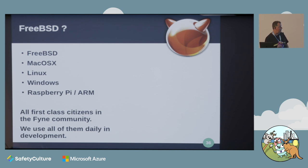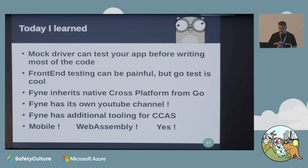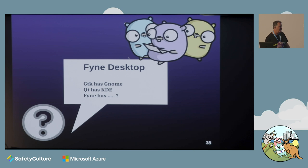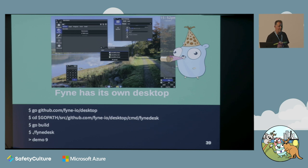We use all the things every day - we're not just Linux or Mac developers, we do it all. Andy is doing a project in the UK with hospitals, taking medical imaging data off expensive machines, running it on a Raspberry Pi with a portable screen to get information out in the field very quickly and cheaply - that's using Fyne. GTK has GNOME, Qt has KDE, Fyne has our own desktop - mainly for medical imaging applications, but it's growing to the point where it's probably a reasonable contender for a low-end desktop.